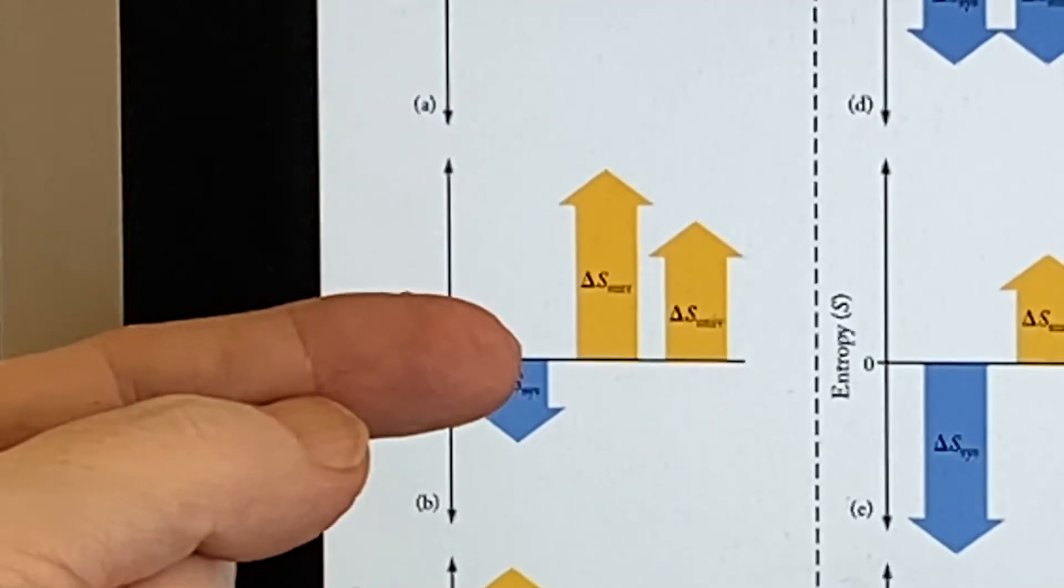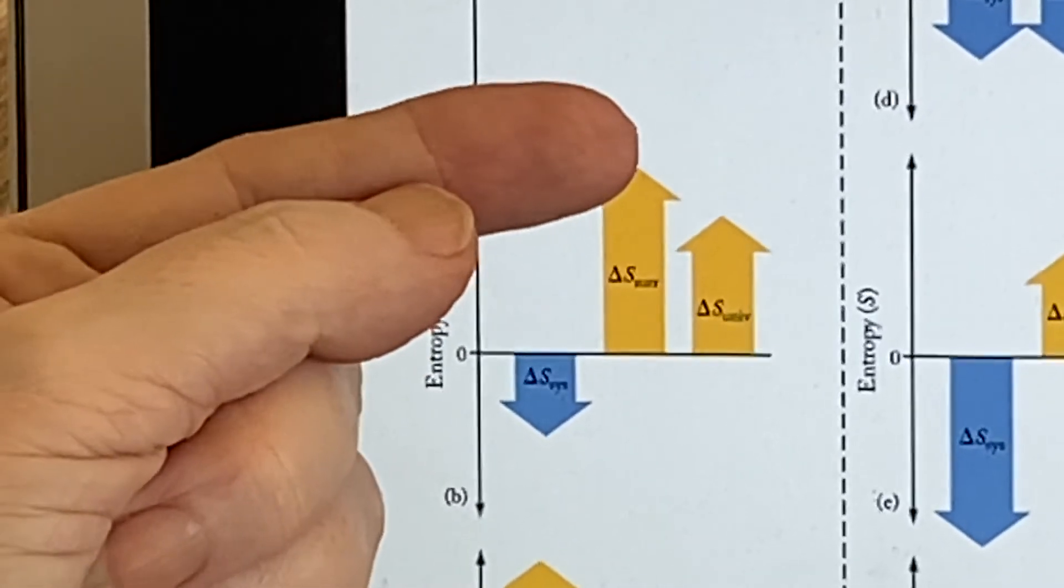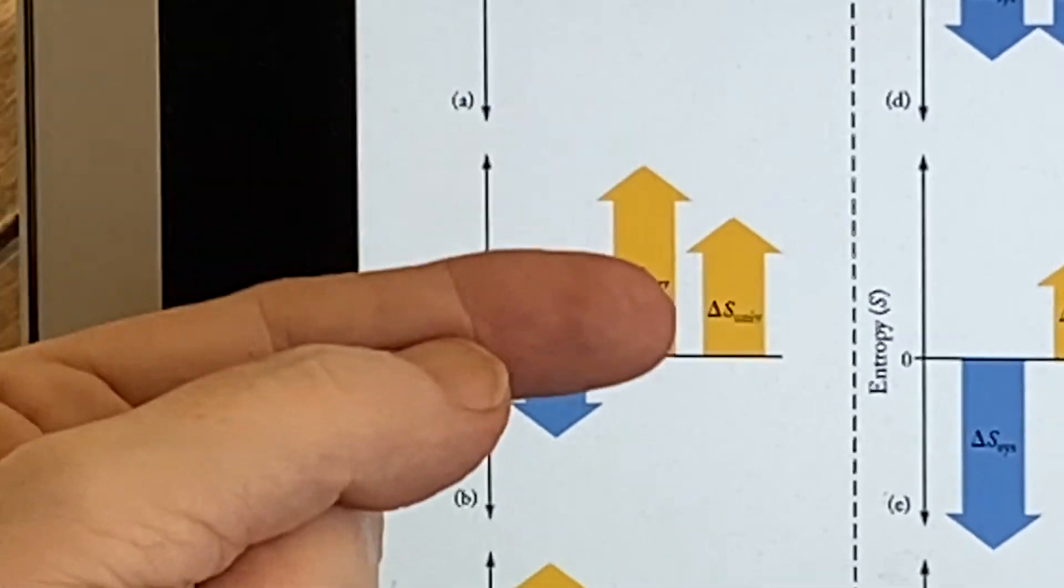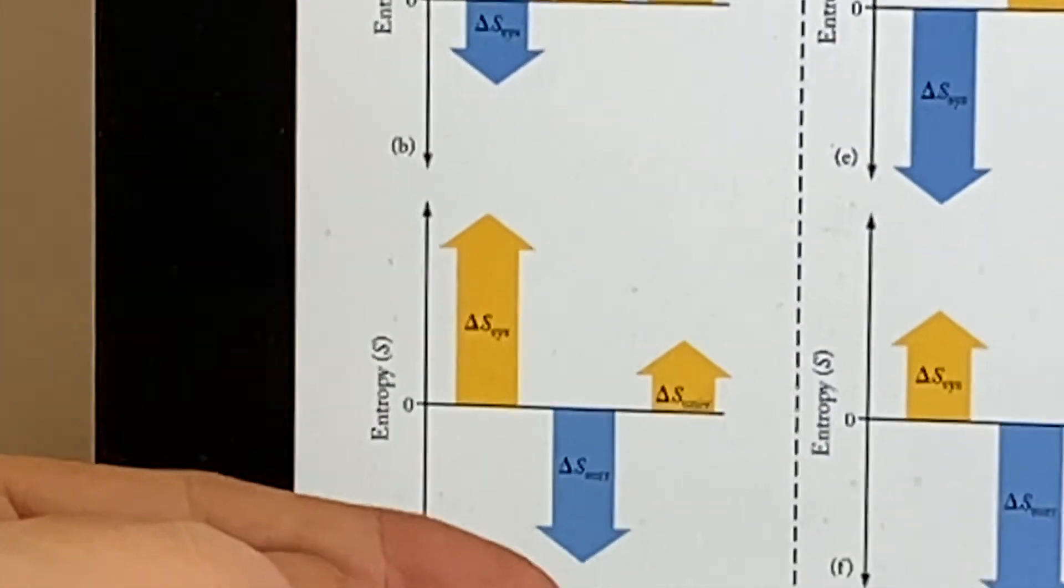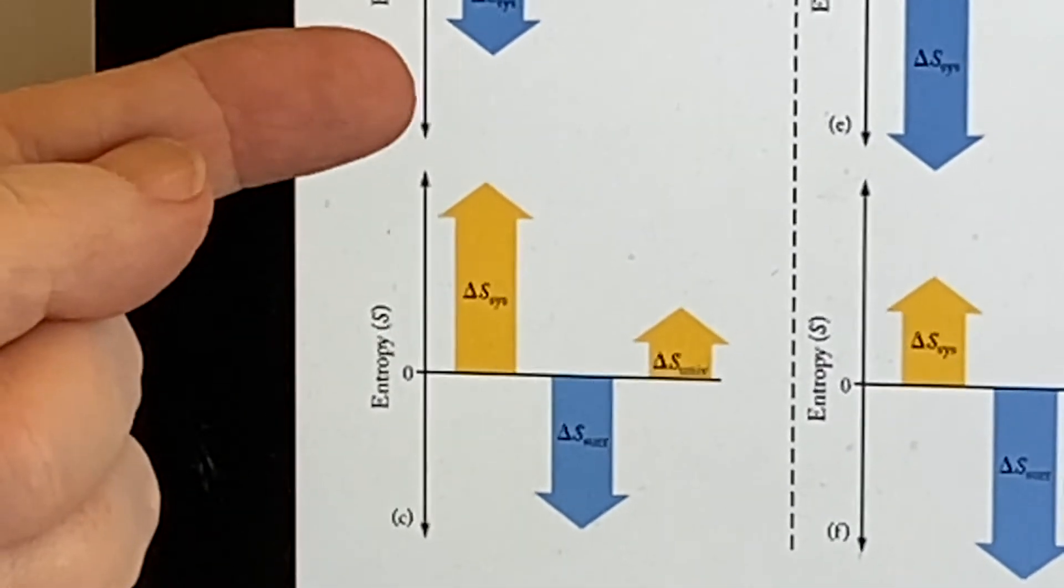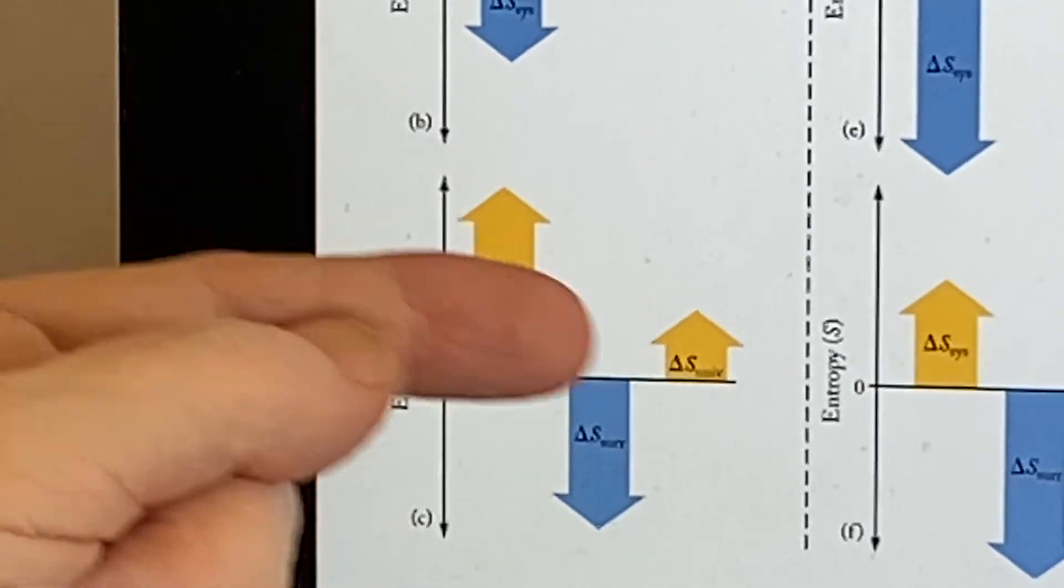Here's a possibility. Delta S of the system was negative, but delta S of the surroundings was much more positive. So that overall, we still had a positive. Or it could be the other way around. That delta S of the system went way up. Delta S of the surroundings went down, but not as much as this went up.